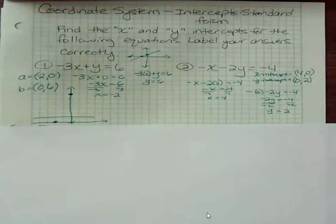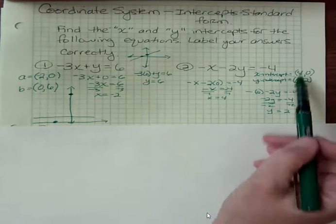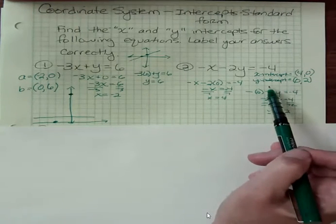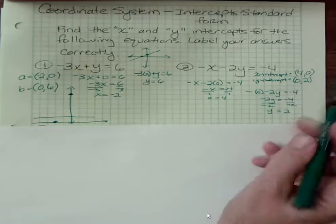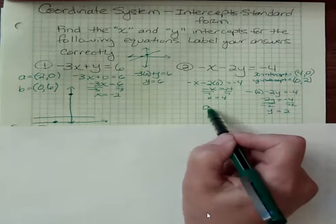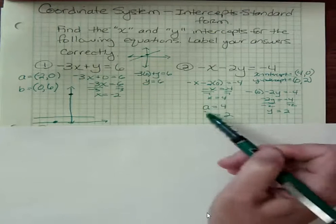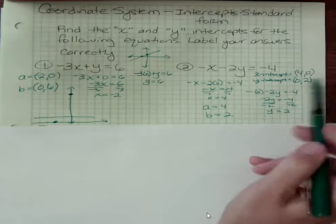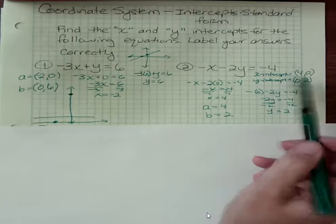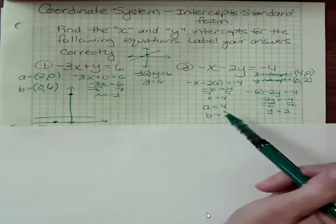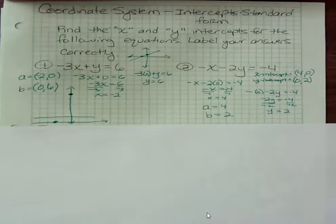Notice I wrote them this way here and I wrote them x intercept and y intercept here. It's the same idea. But I could also just do this, a equals four and b equals two. That also says my x intercept is four, my y intercept is two. So you can write them as an ordered pair, but you could also write them in this way. It says the same thing, as long as you're using a and b and not x and y.